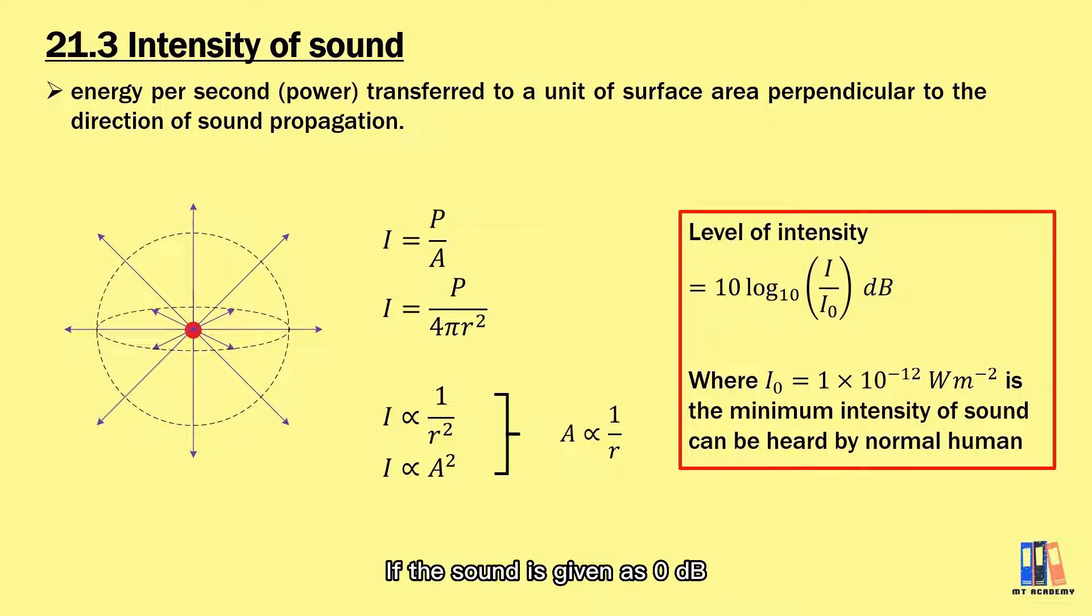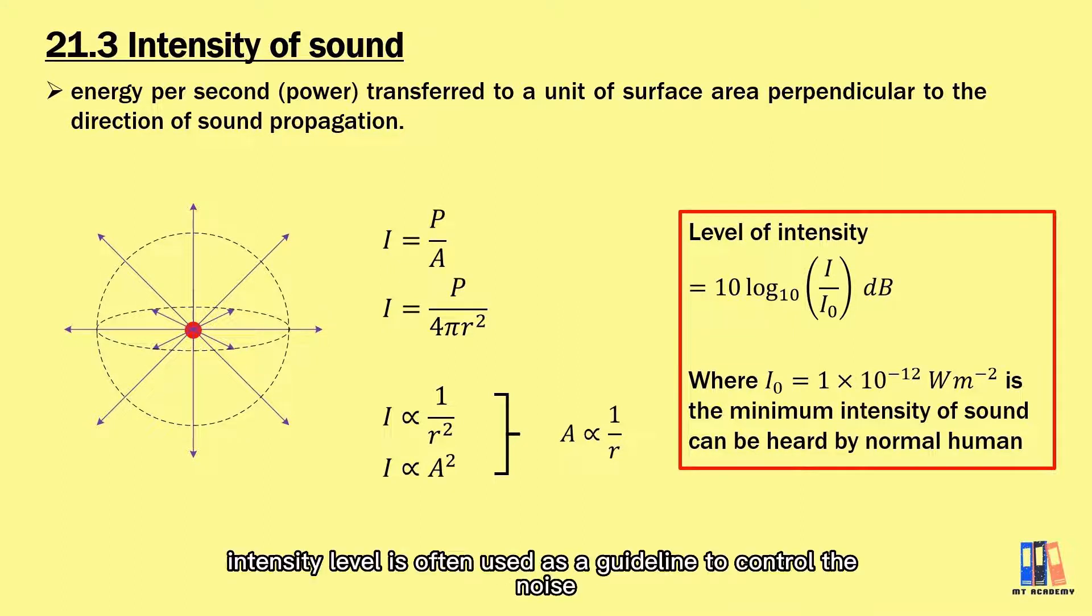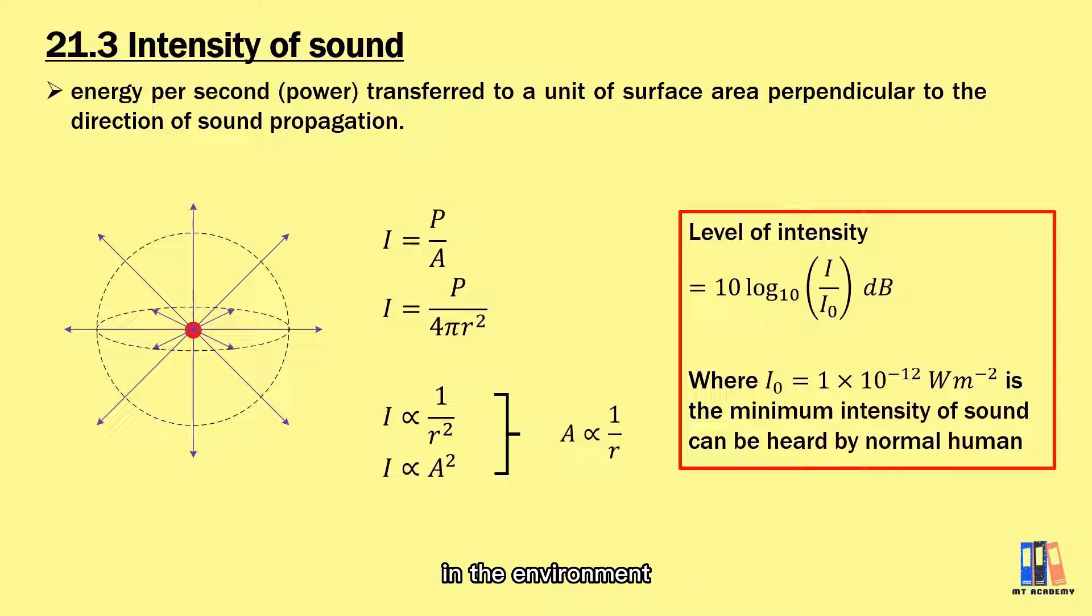So if the sound is given as 0 dB, it is the lowest intensity of sound can be detected by us. In practice, intensity level is often used as a guideline to control the noise in the environment, so it is also known as the noise intensity. If it exceeds a certain value, it could damage our ear.